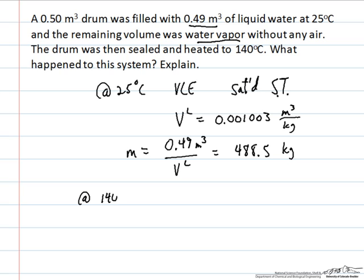Now we want to see what happens at 140 degrees C. As we increase the temperature, we need to determine what state the system will be in — will we still have vapor-liquid equilibrium, or something else? One way to investigate this is to look at the specific volume of the liquid at 140 degrees C, which is 0.00108 m³ per kilogram — a significant percentage increase, though a small absolute change.